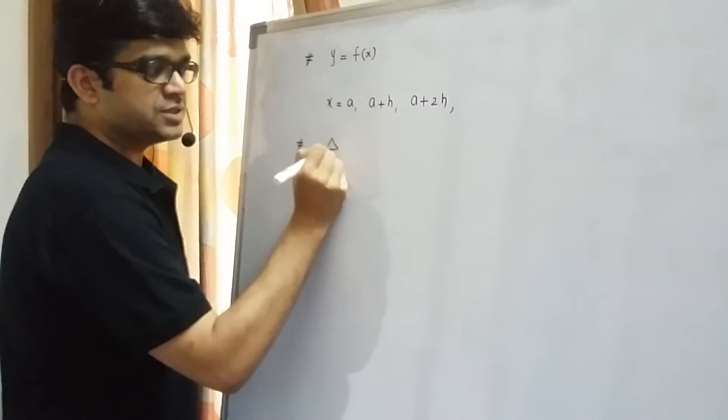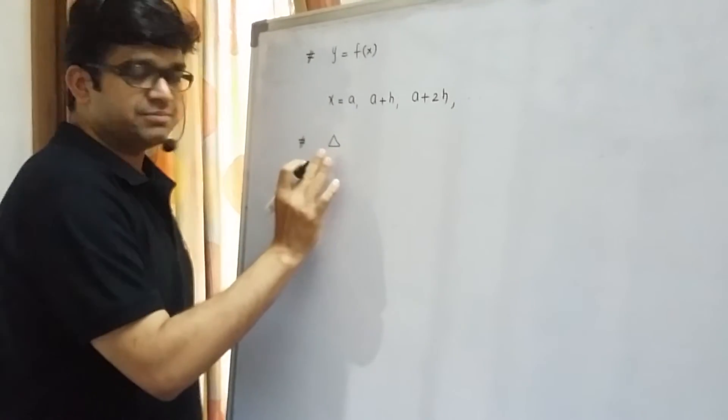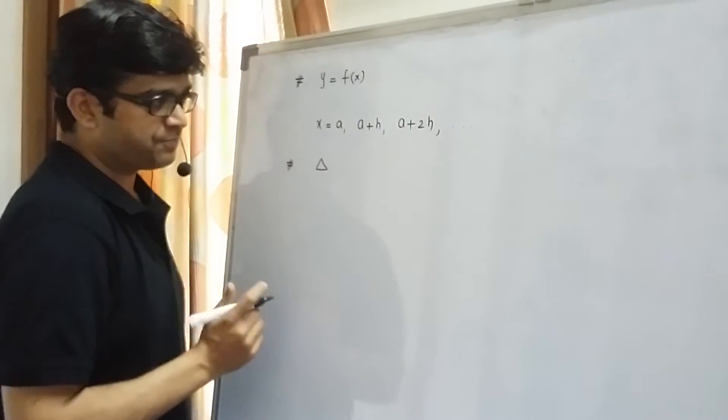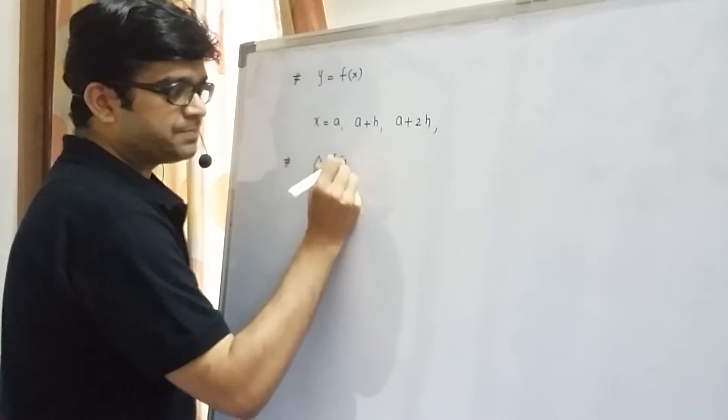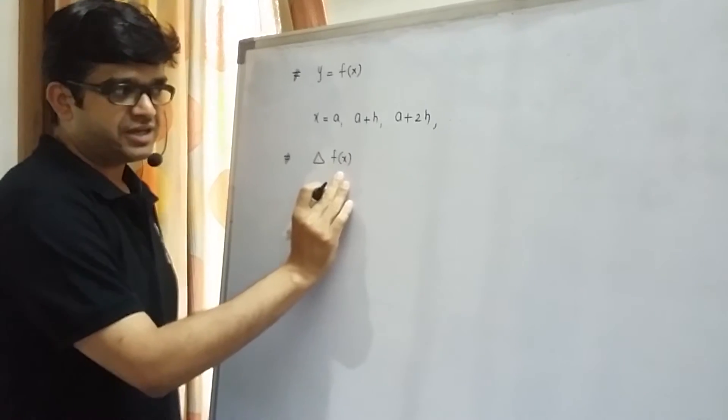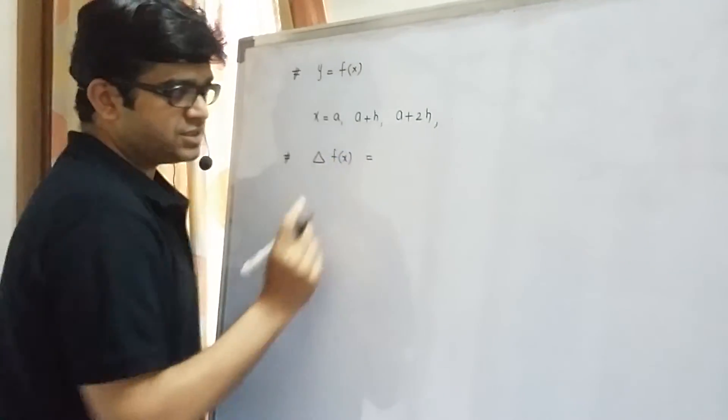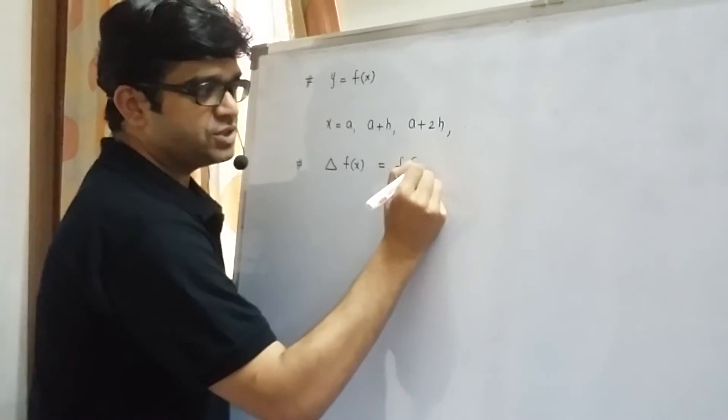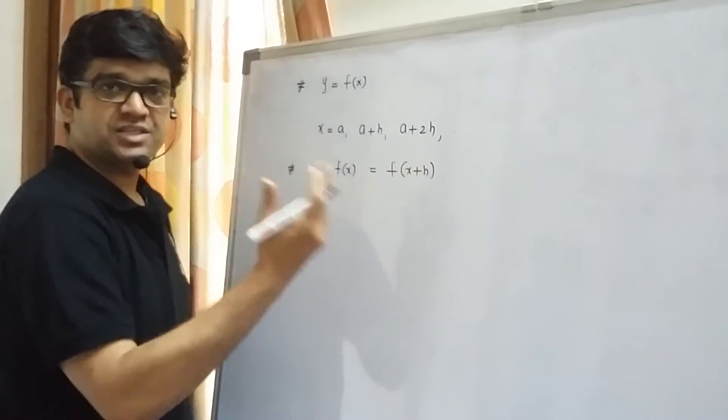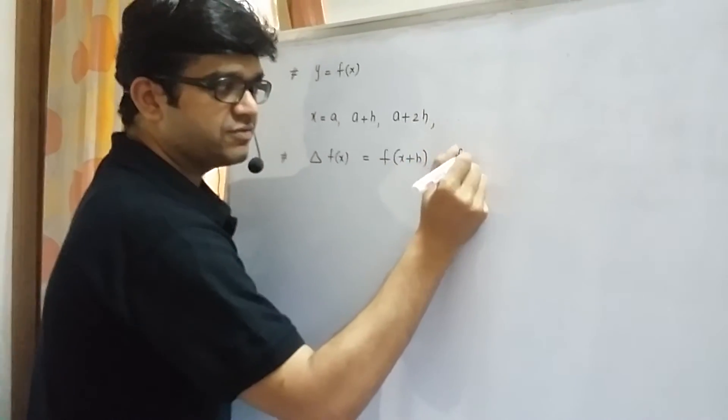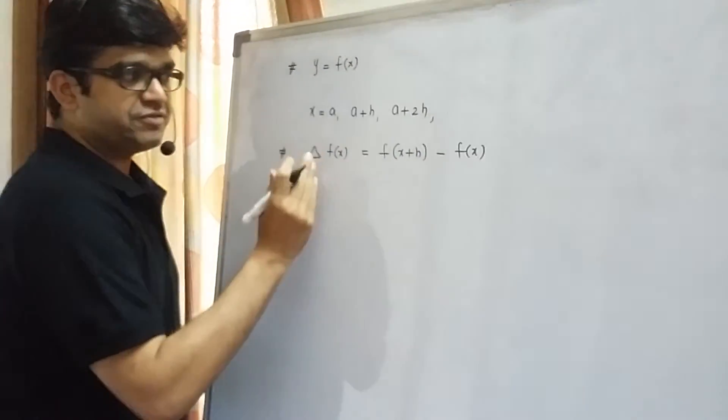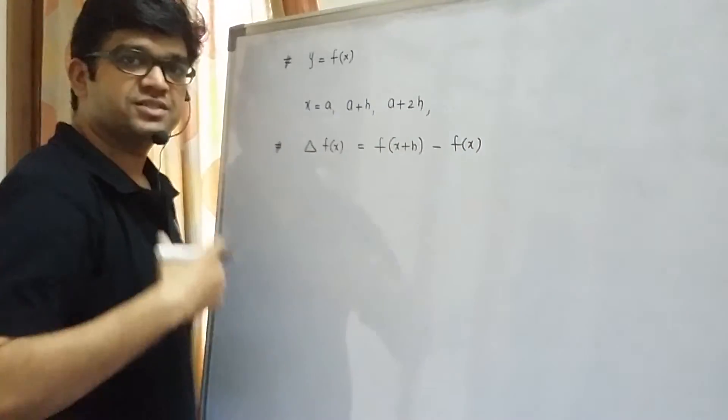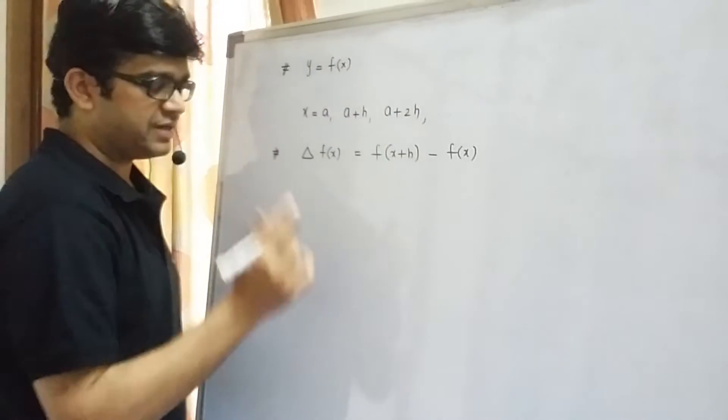Next, let us understand what this symbol means. The symbol is called as delta and it is called as Newton's difference operator. When this particular symbol delta is applied on a function f of x, what it does is it gives us the difference of the function's next value at x plus h with the current value. So delta f(x) is f of x plus h minus f of x. f of x plus h is the next value and f of x is the current value.